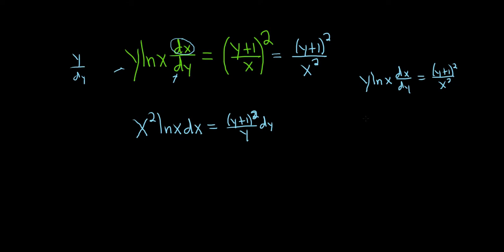So you could show some steps like this. You could say, okay, this is y x squared ln x dx dy equals y plus 1 squared. So all I've done in this step is multiply by x squared.